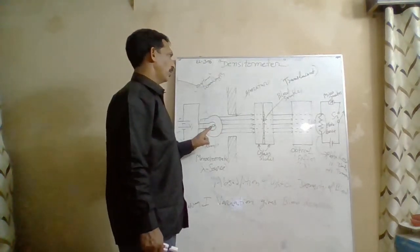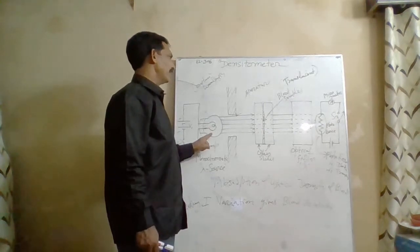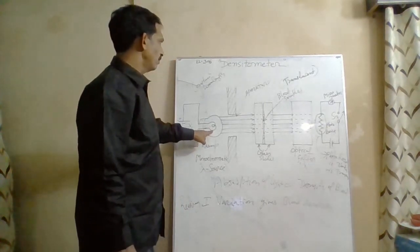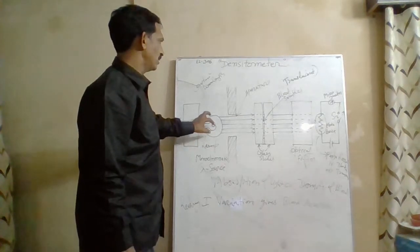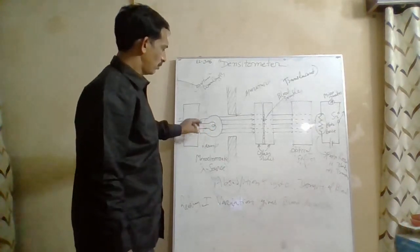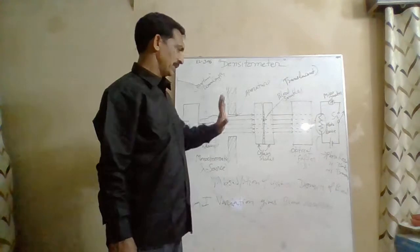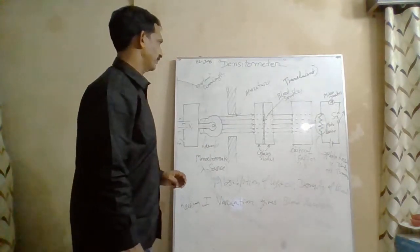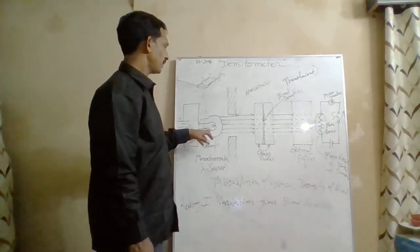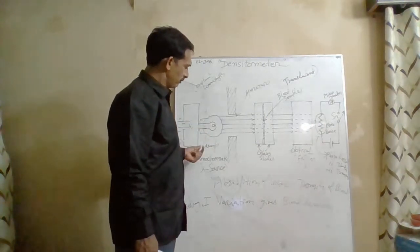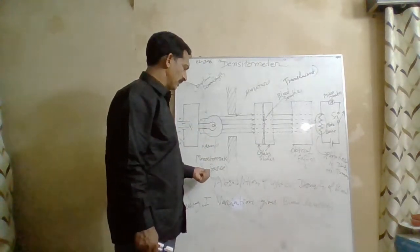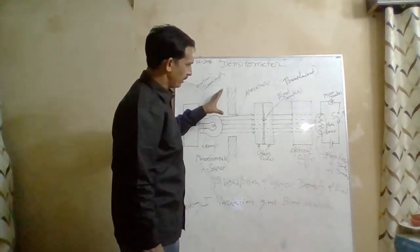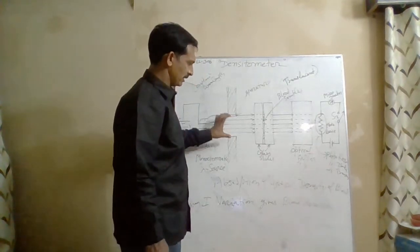This is called monochromatic light, and the wavelength is kept constant — we can call it a constant wavelength. This constant wavelength, which is the monochromatic signal generated by the lamp, is then passed on.